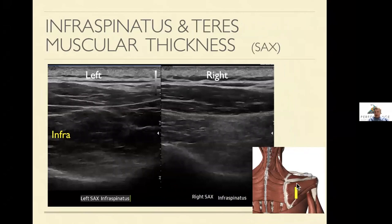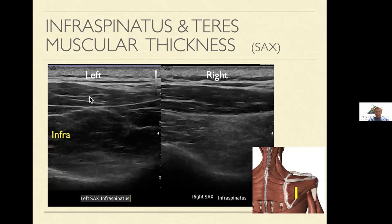Then I look short axis at teres minor and infraspinatus, running from the medial border of the scapula all the way out to the shoulder, looking for atrophy. You can clearly see an asymmetry in terms of the infraspinatus on the right versus the left with fatty infiltration and irregular echo texture. Also look for symmetry in the traps, and get good at finding the same location for measuring muscle size.